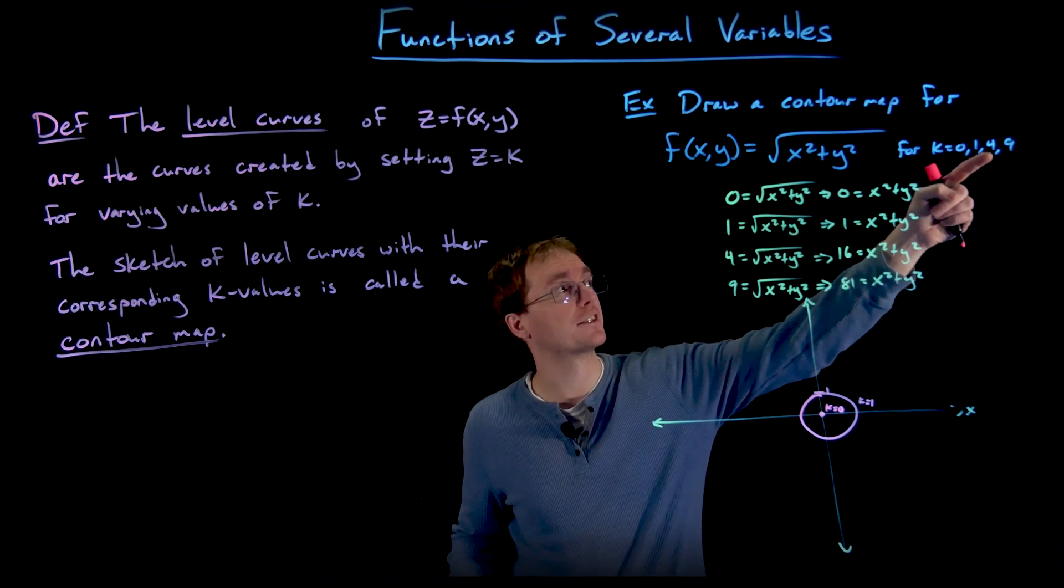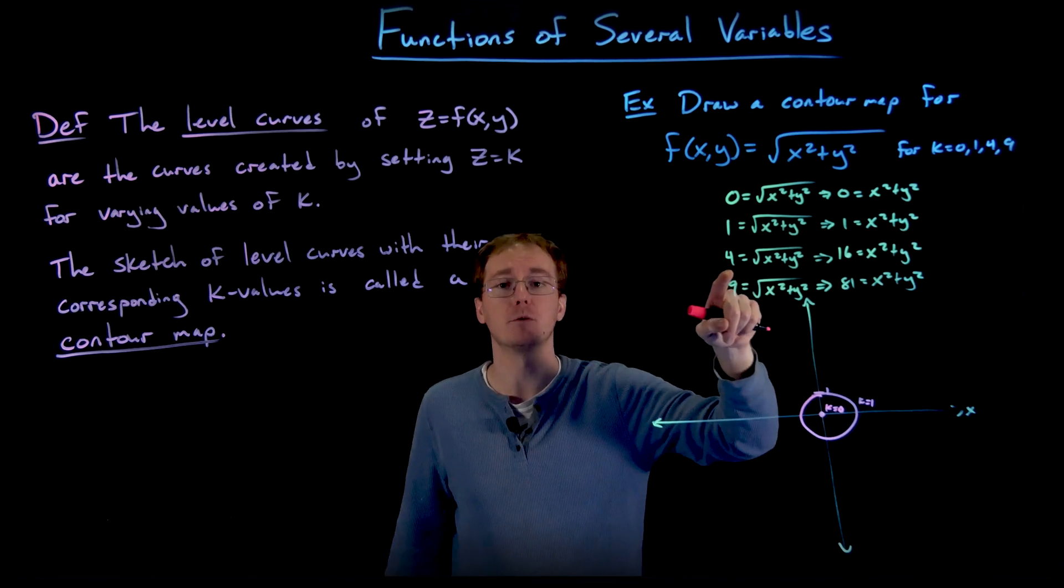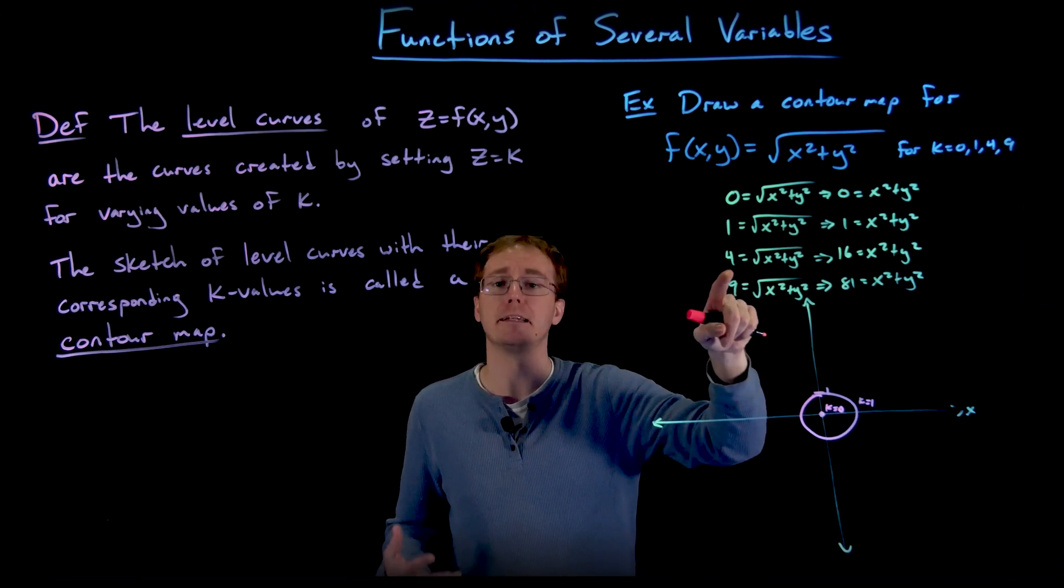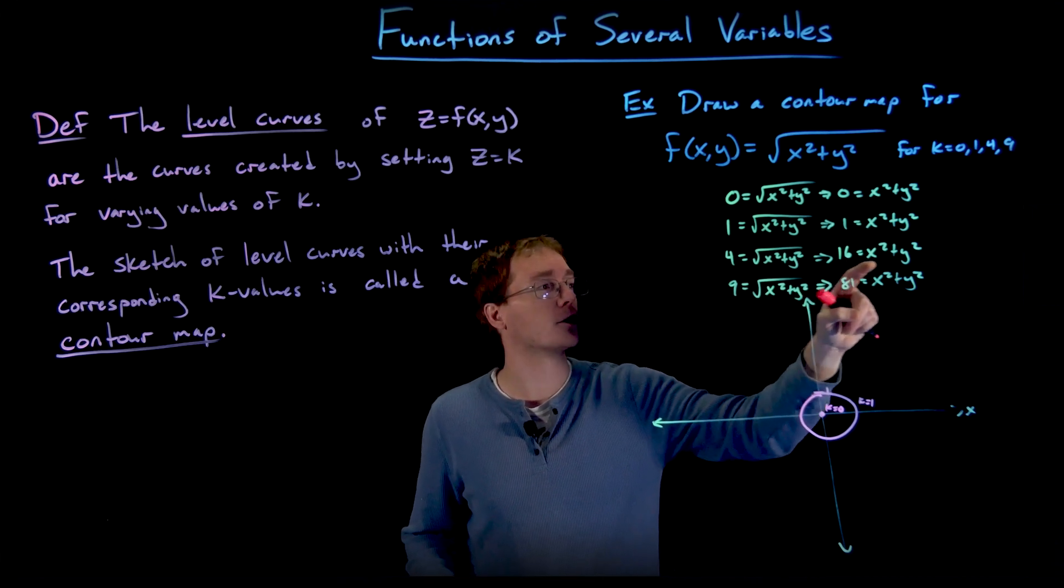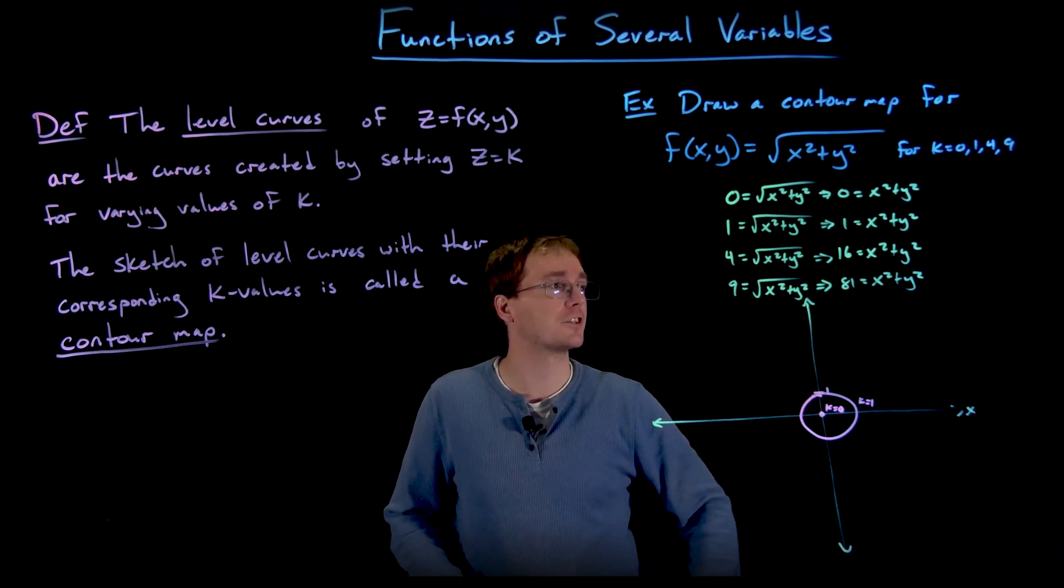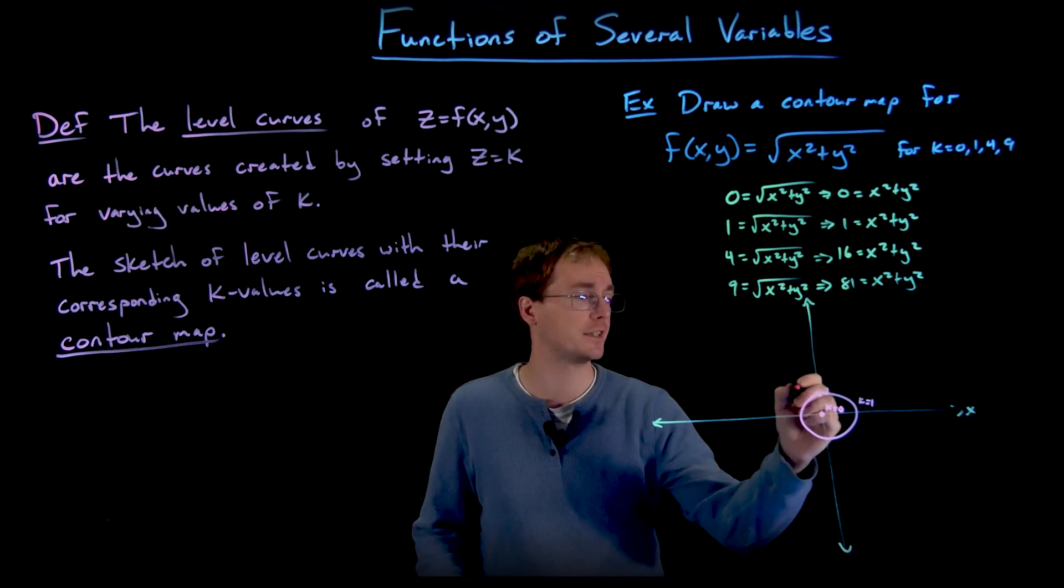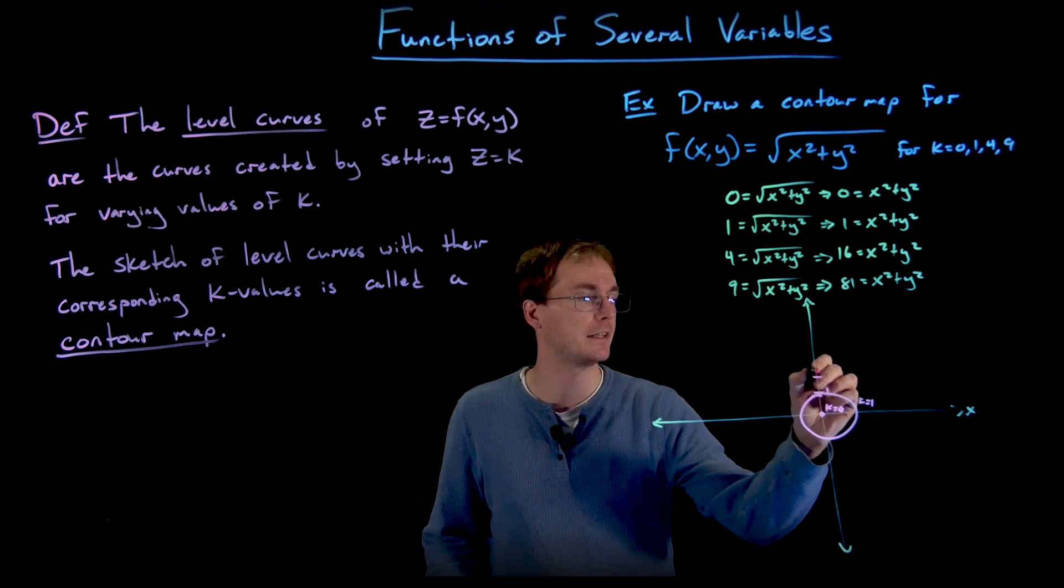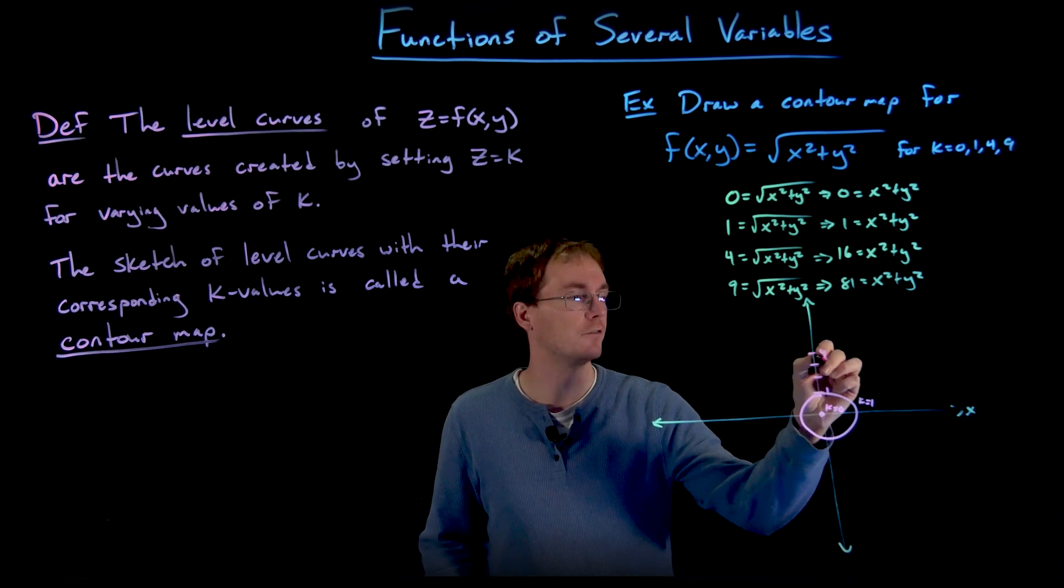So next, if we move up to our next level curve at the plane when z = 4, we see where that plane intersects our surface. And that curve of intersection is going to give us the circle described by x² + y² = 16. But we should recognize that as the circle of radius 4.